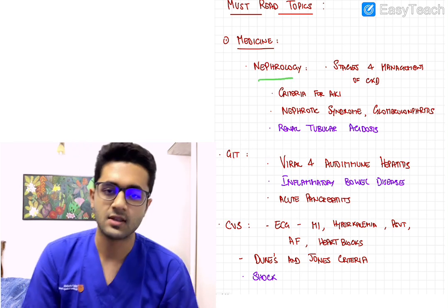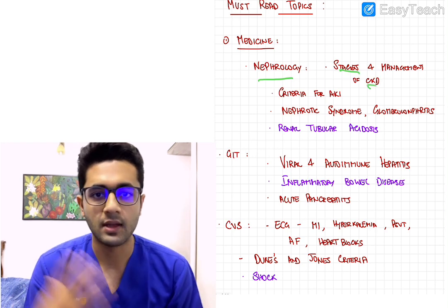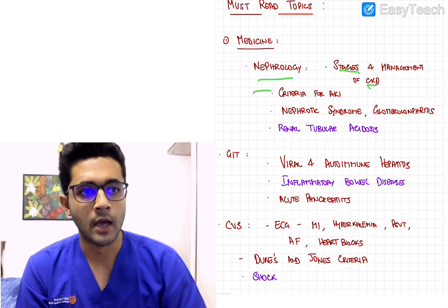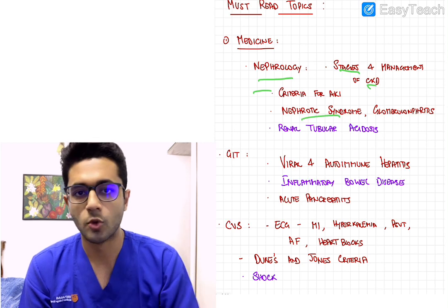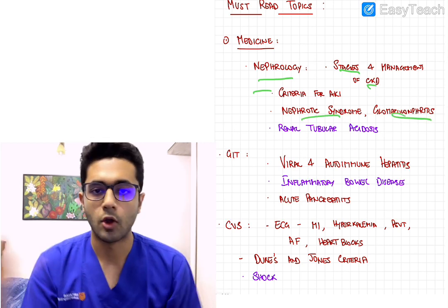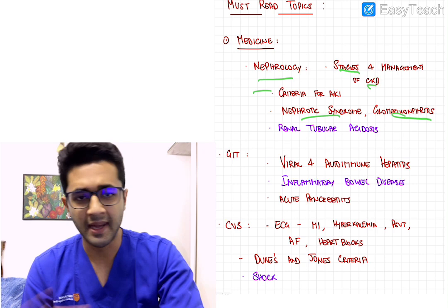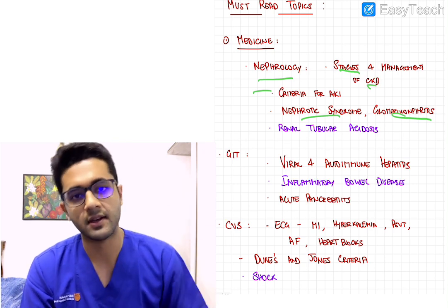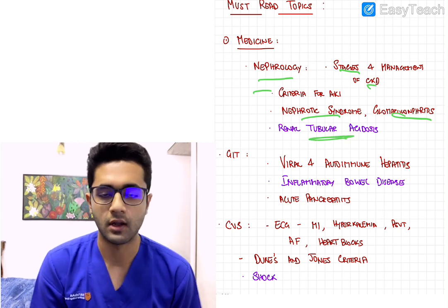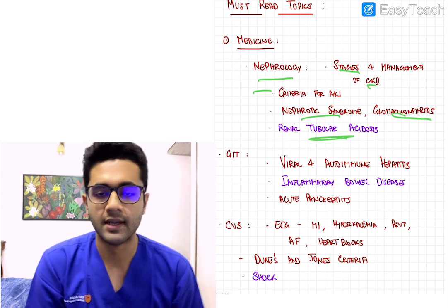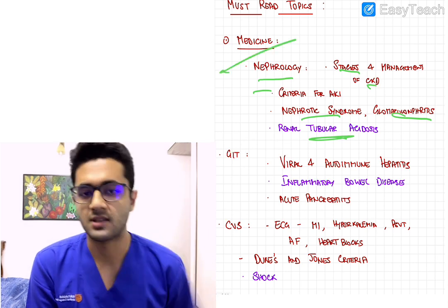First, nephrology — something that a lot of us tend to ignore. In nephrology, it's important to know about the stages of CKD and the management and indications for renal replacement therapy. It's important to know about the different criteria for AKI and when it's diagnosed. Nephrotic syndrome is super important in medicine and pediatrics, and all those glomerulonephritides — a lot of questions come from those. Renal tubular acidosis is a must-know topic — the types and how to differentiate them are super important.